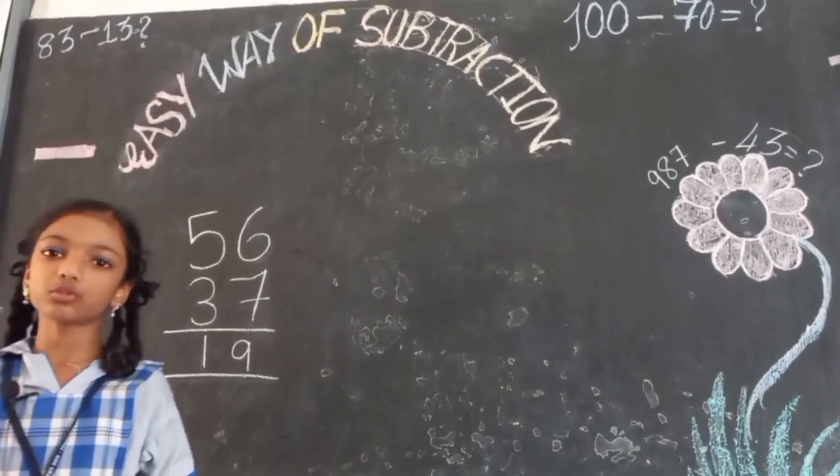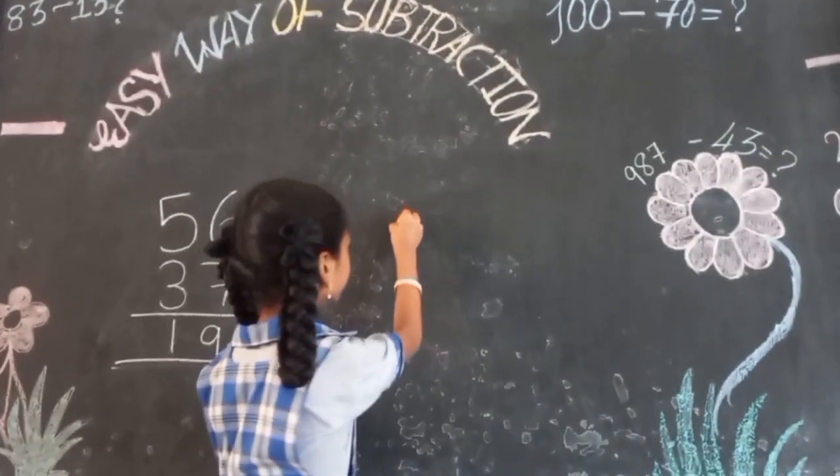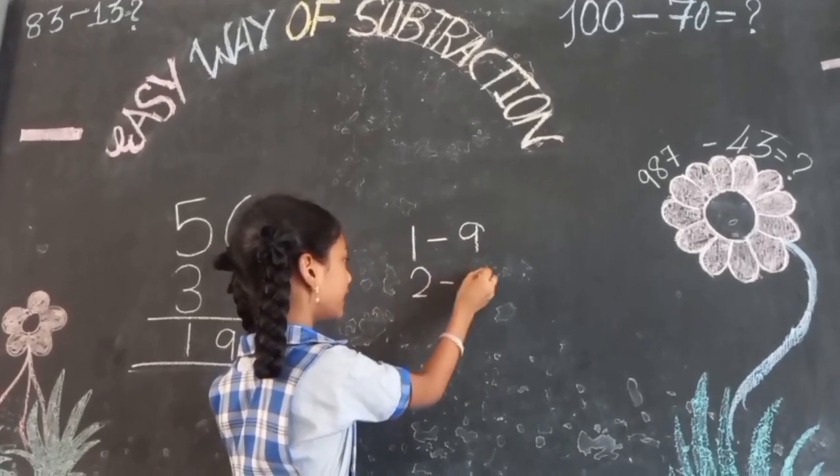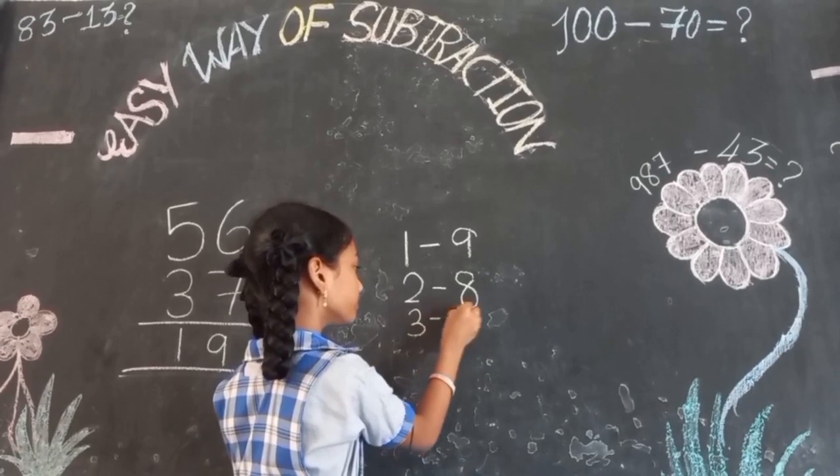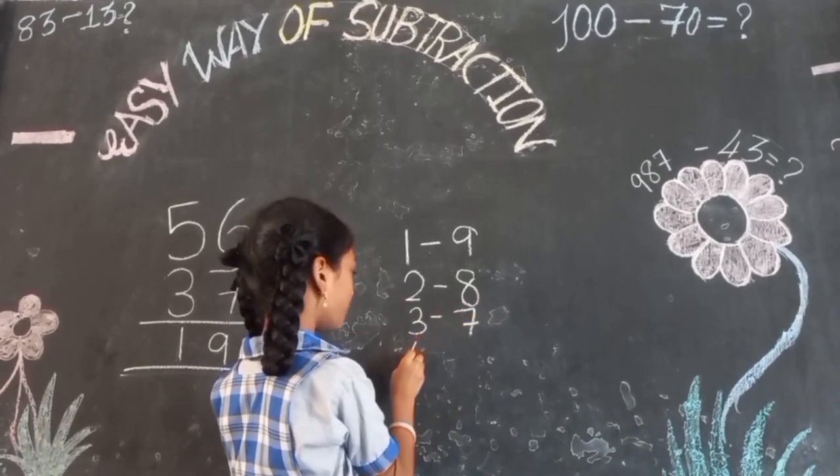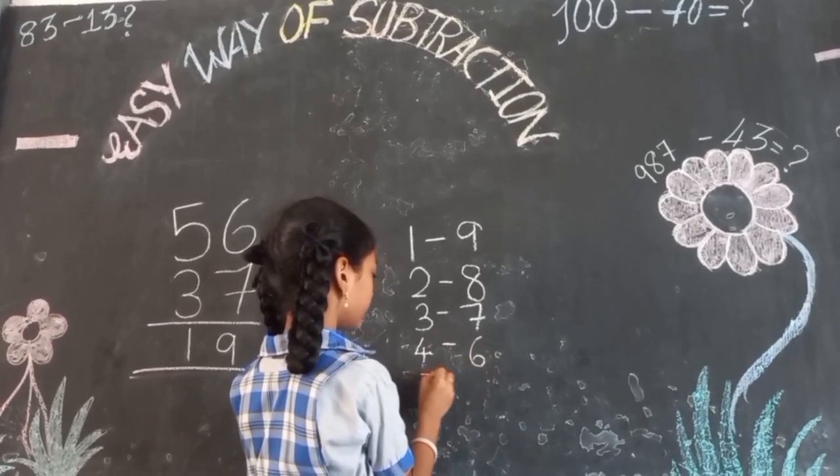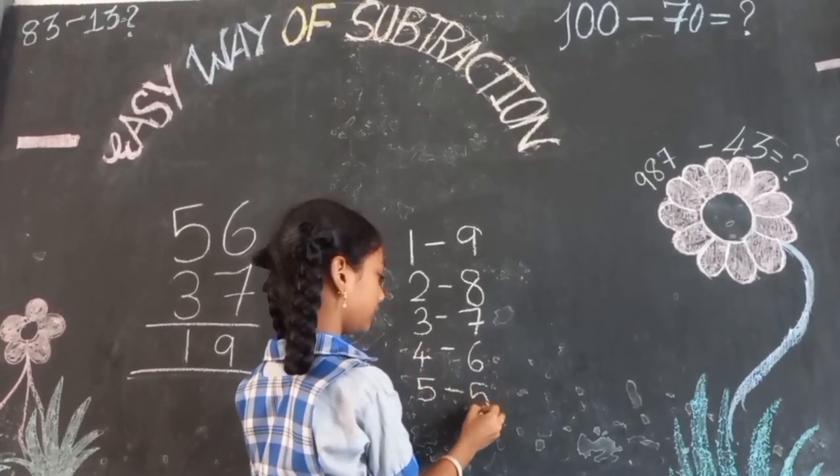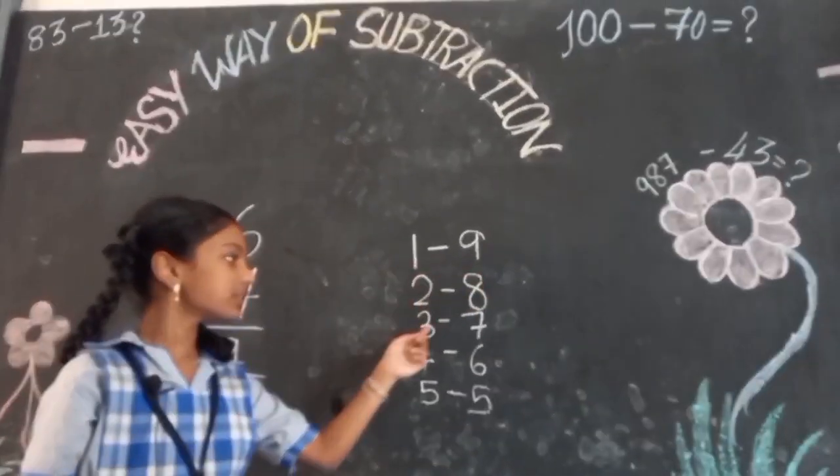First, we have to write the complement of the numbers. Complement of 1 is 9, complement of 2 is 8, complement of 3 is 7, complement of 4 is 6, complement of 5 is 5. That is, the sum of two numbers will be 10.